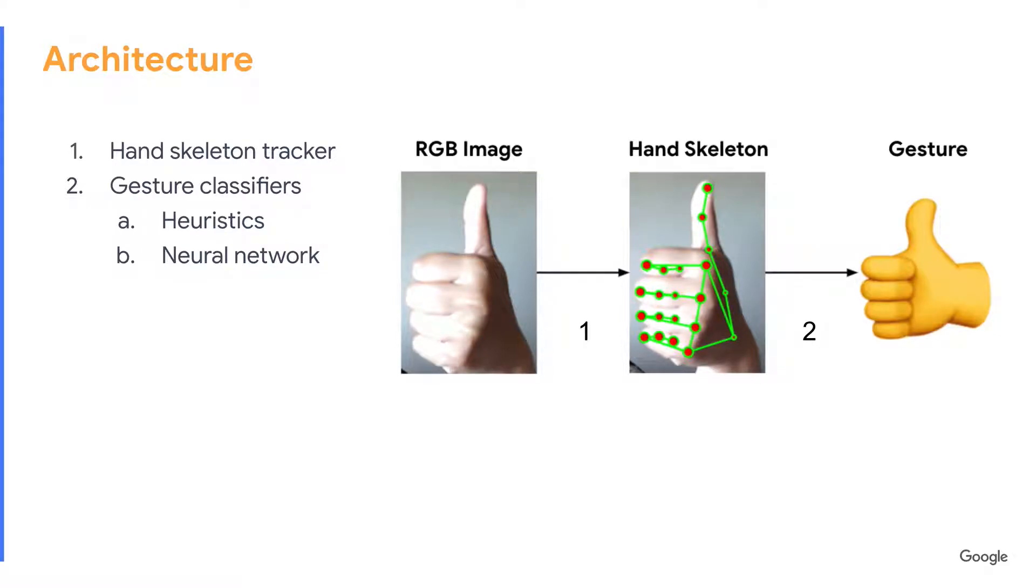We use a two-step approach. First, extract hand skeletons from RGB images. Second, classify gestures from the hand skeletons.